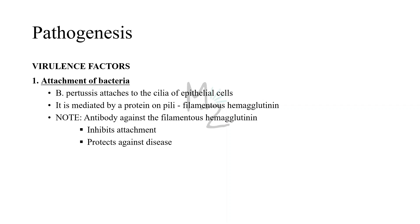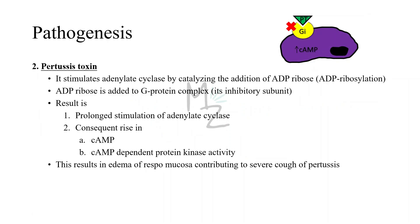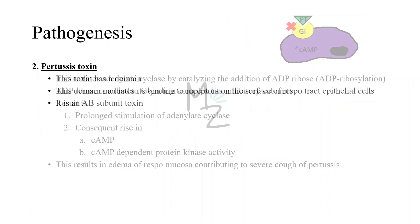Regarding virulence factors — first is attachment: Bordetella Pertussis attaches to the cilia of epithelial cells, mediated by a protein on the pili called filamentous hemagglutinin. Antibody against filamentous hemagglutinin inhibits attachment and protects against the disease. The second virulence factor is pertussis toxin, which stimulates adenylate cyclase by catalyzing the addition of ADP ribose — a process called ADP ribosylation — to the inhibitory subunit of the G protein complex, the Gi protein. This results in prolonged stimulation of adenylate cyclase and a consequent rise in cAMP, leading to edema of respiratory mucosa that contributes to the severe cough of pertussis.